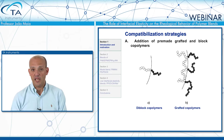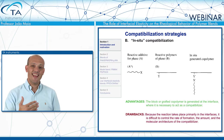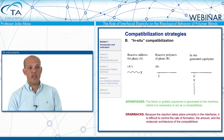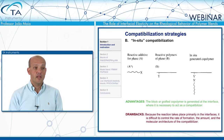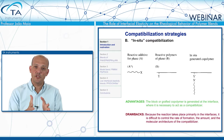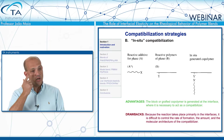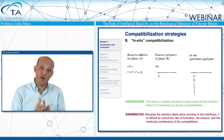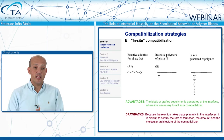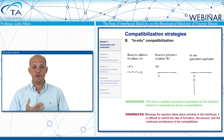The second way of compatibilizing these blends is to create a third element during processing rather than adding one. We have phase A with a reactive group X, and phase B with a reactive group Y, and we make X and Y react. The advantages are that this block or grafted copolymer is generated in situ at the interface — exactly where we want it. The drawbacks are that the reactions take place primarily at the interfaces, so it's slightly more difficult to control the rate of formation, amount, and molecular architecture of the compatibilizer.